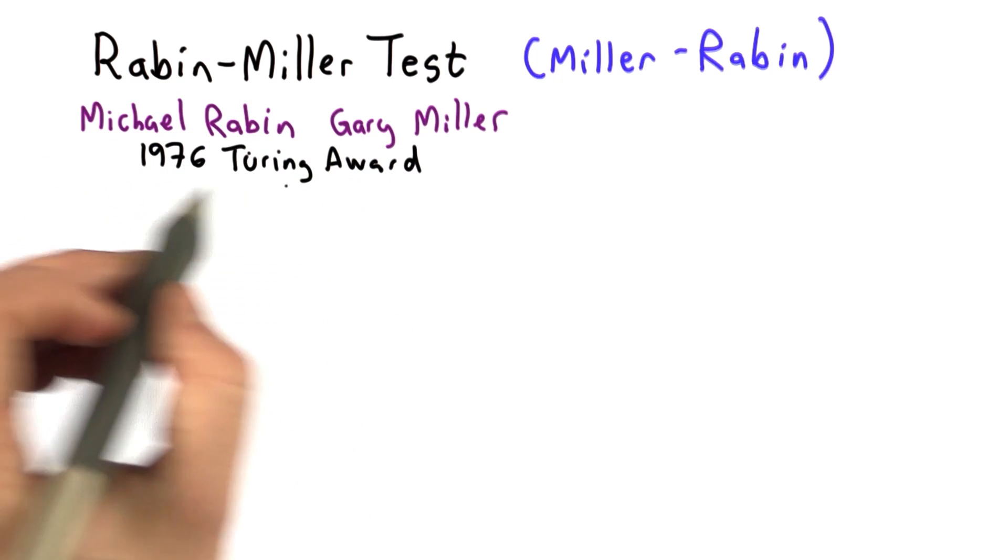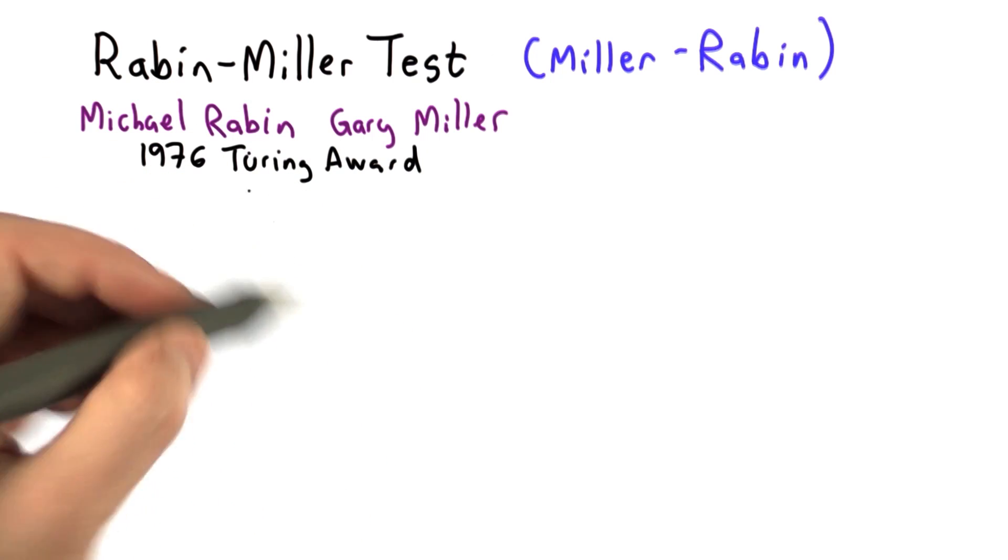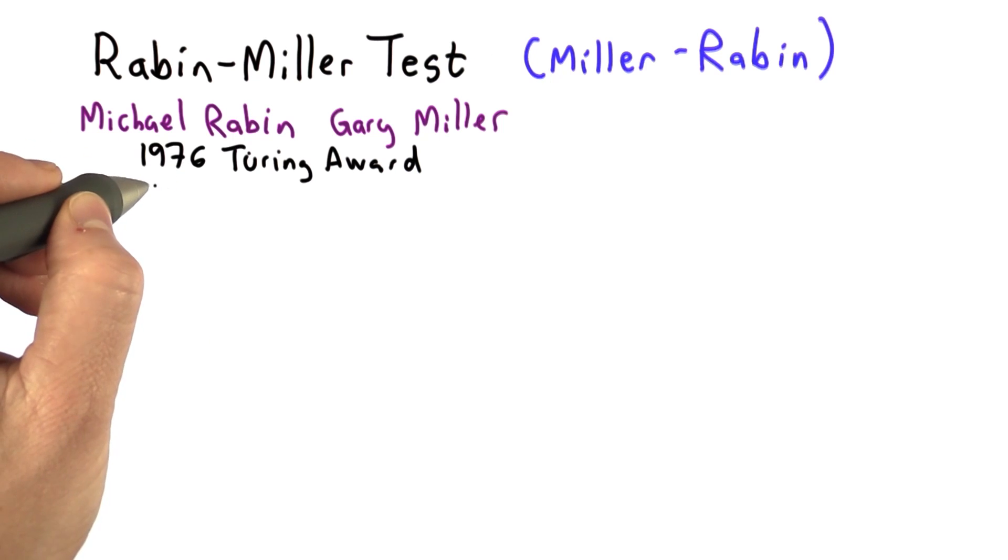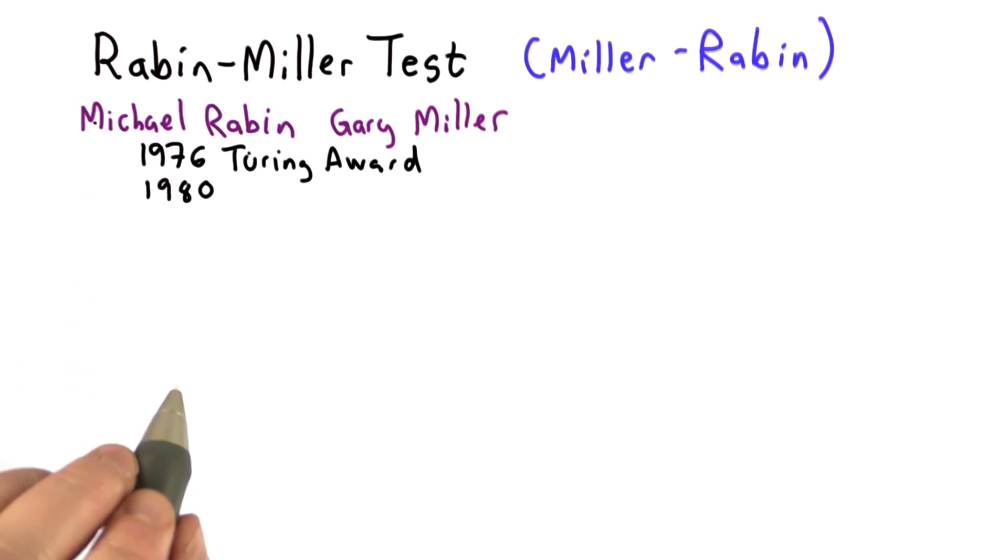Michael Rabin, who won the Turing award in 1976, probably did some of his more important work after winning the Turing award, which is quite unusual, proposed this in 1980, and that's the one that we'll talk about.